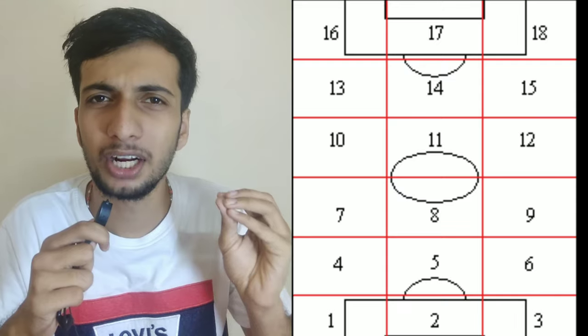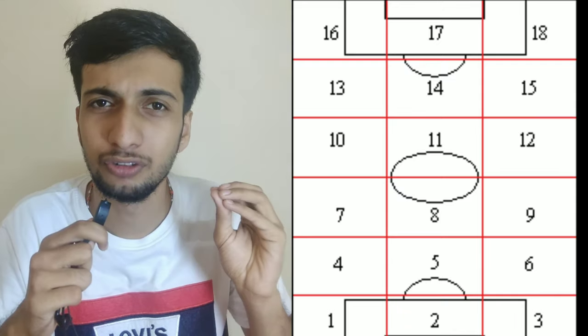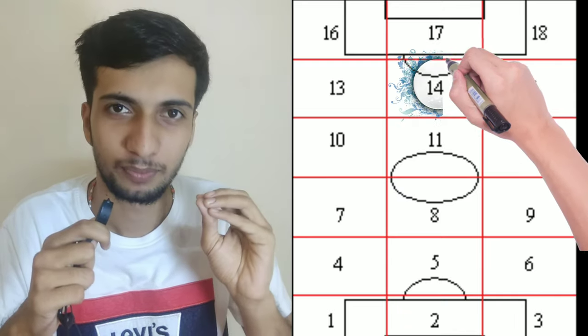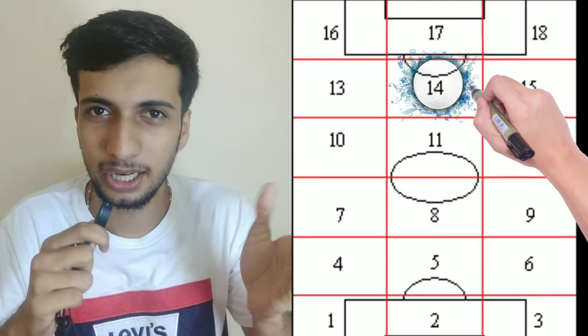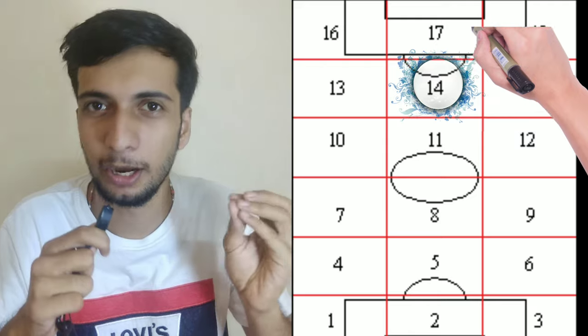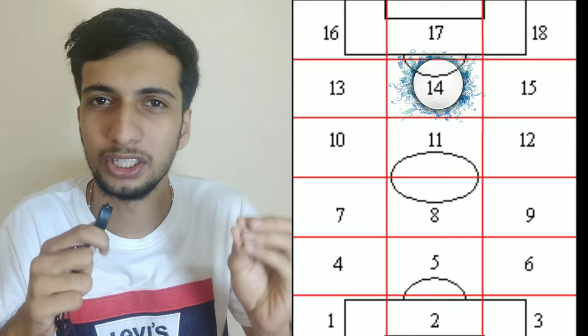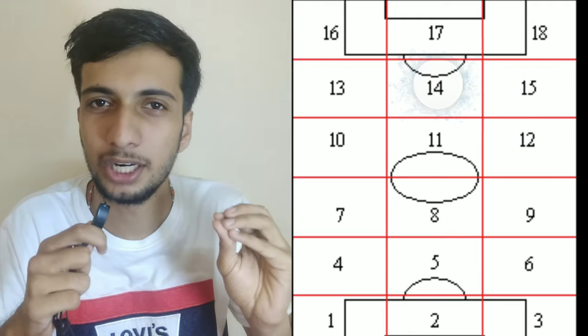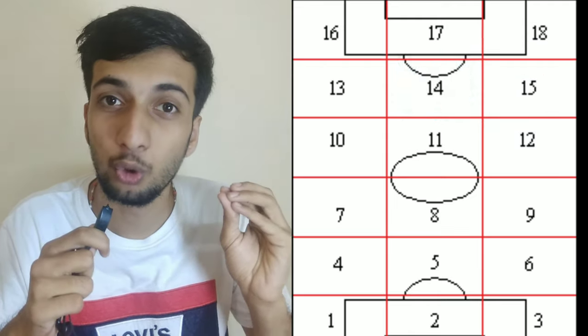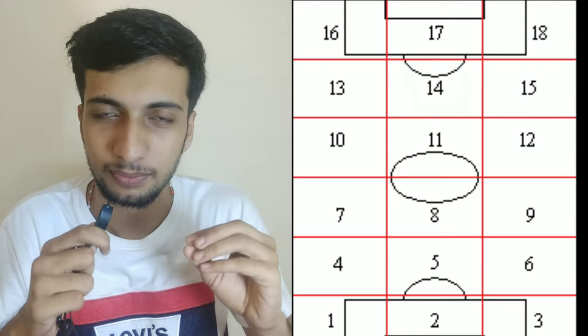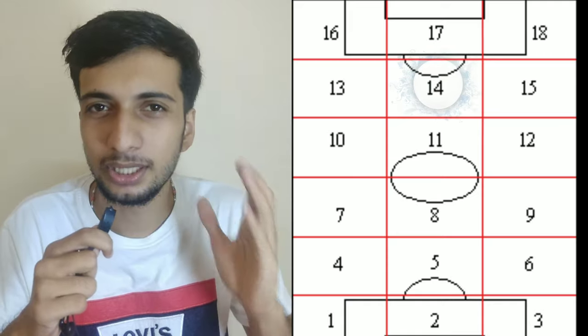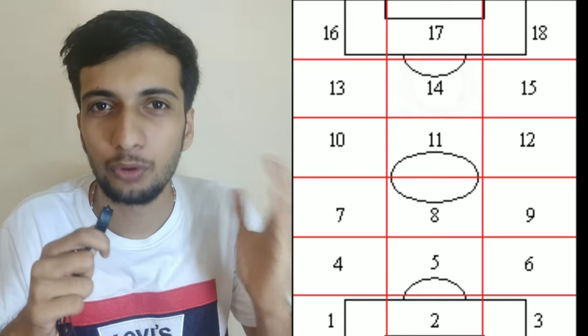This is a very important part of Zone 14. The attacking midfielder plays in this area — that's Zone 14. This is the importance of Zone 14. This is the golden square. This is the explanation of Zone 14.